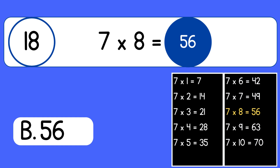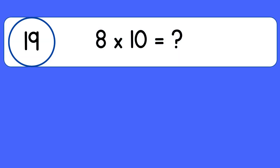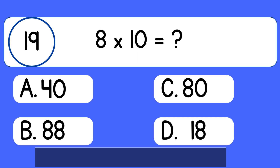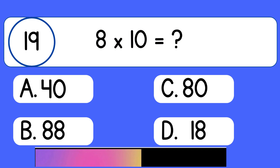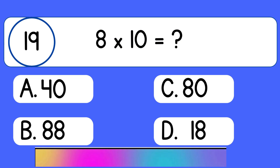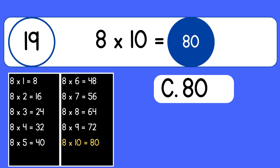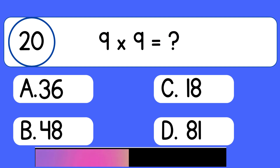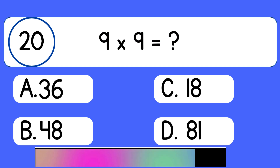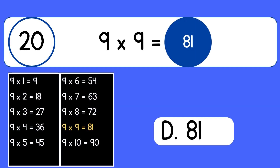Seven times eight equals fifty-six. Eight times ten. Eight times ten equals eighty. Nine times nine. Nine times nine equals eighty-one.